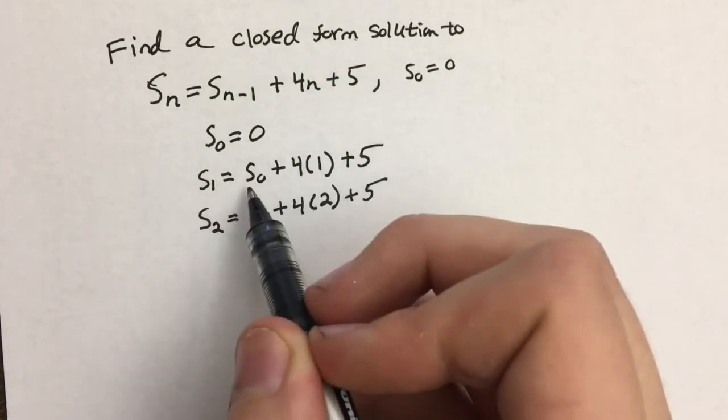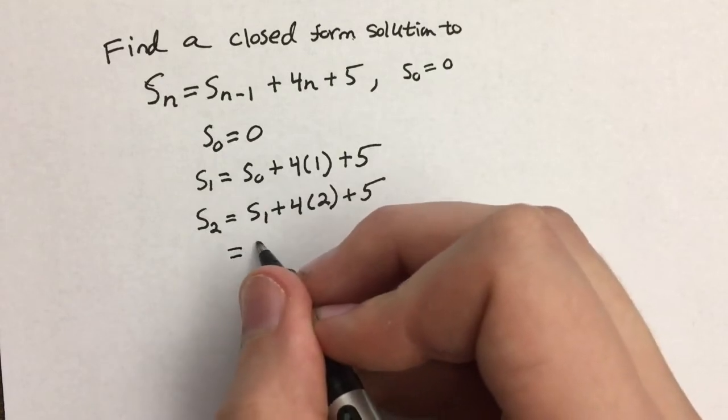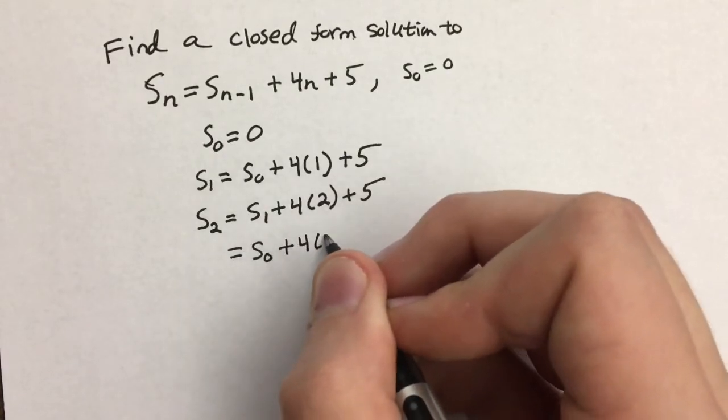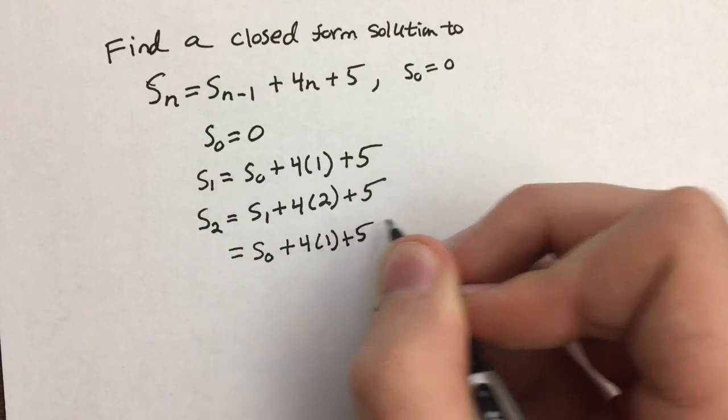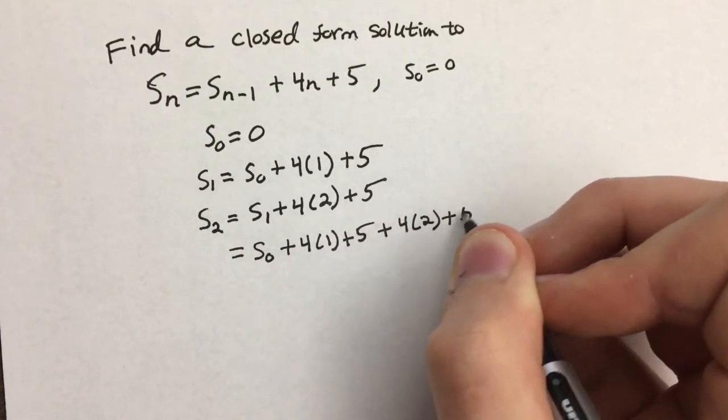And in the last step we found this to be S sub 1, so we're going to substitute that in here. So this becomes S sub 0 plus 4 times 1 plus 5 plus 4 times 2 plus 5.